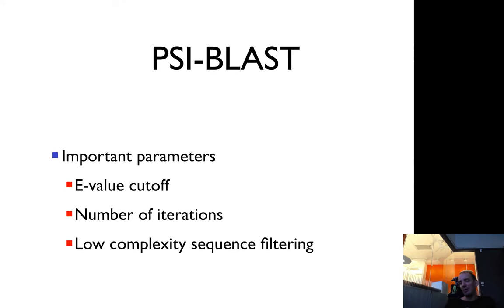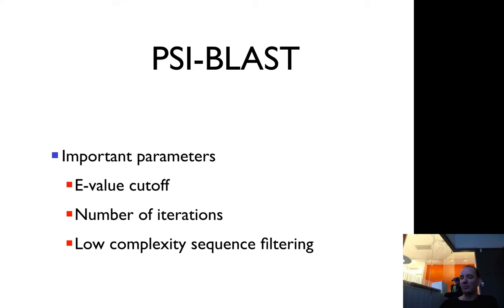The important factors here are the e-value cutoffs and the number of iterations. The more iterations you run, the higher the risk of getting false positives. The same applies if you have lower e-value cutoffs — you can also have a higher risk of getting false positives. In particular, it's often important to use some kind of low complexity filtering. The latest version of BLAST doesn't use a specific filter, which is probably better on average, but there are cases where you end up getting false positives because of low complexity sequences.